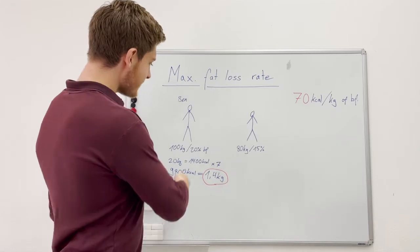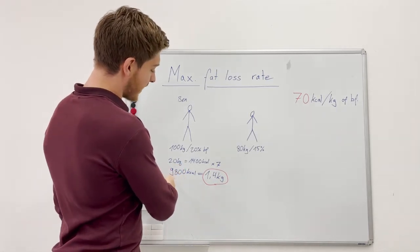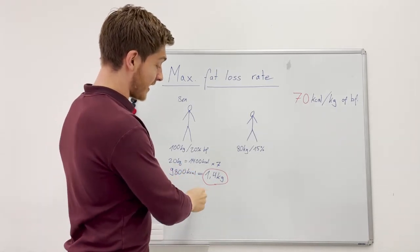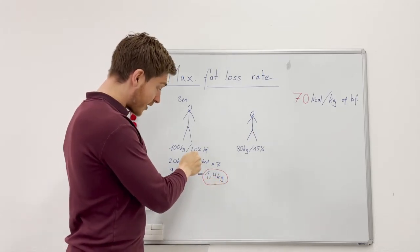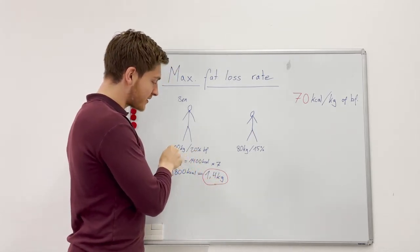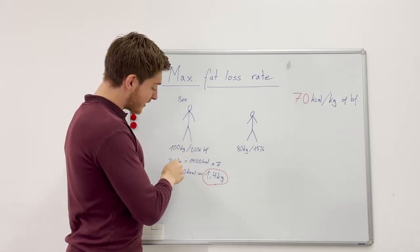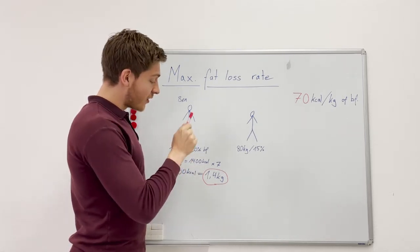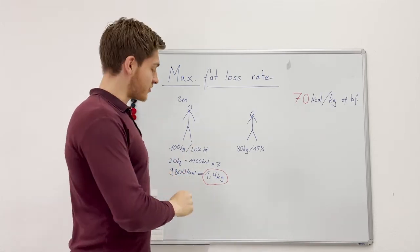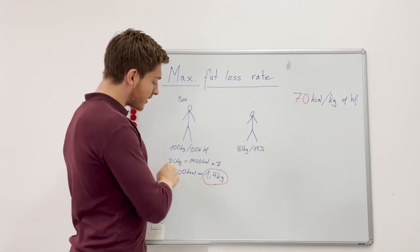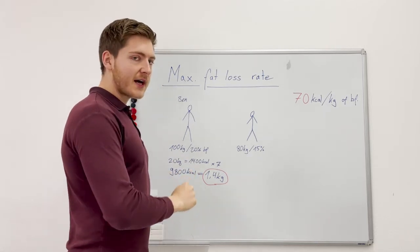We have to keep in mind as we progress, as Ben progresses, this rate will become lower. Because let's say after a week if he goes into a deficit of 9800 calories per week and he lost 1.4 kilograms, his body fat goes down, his initial weight goes down.